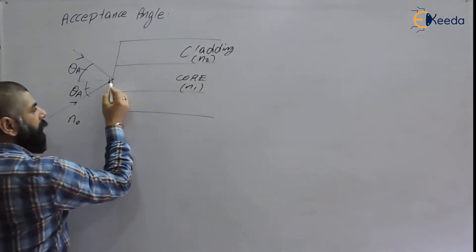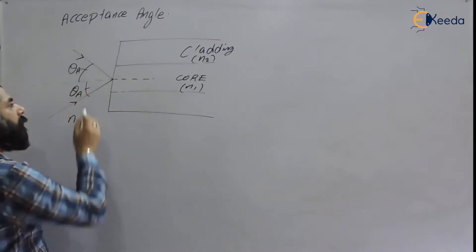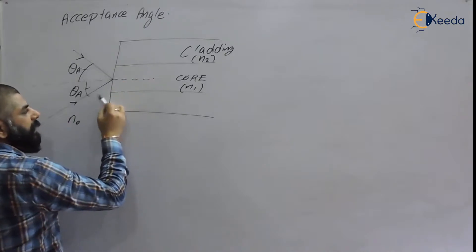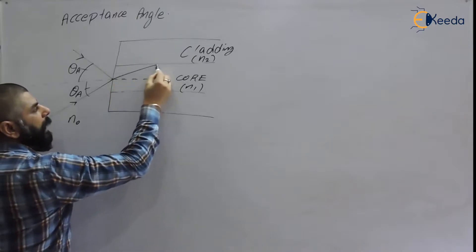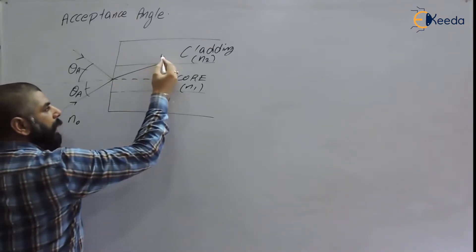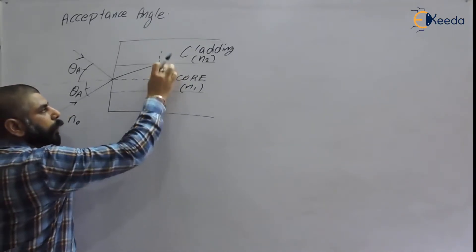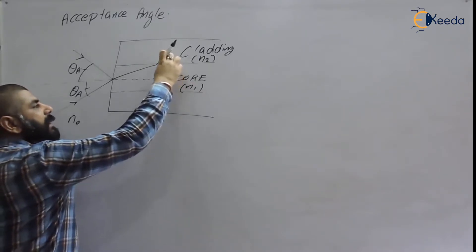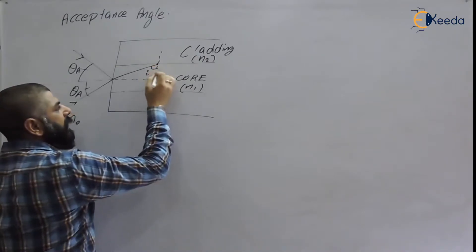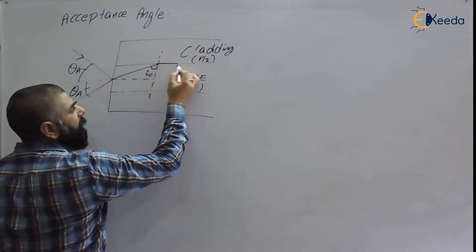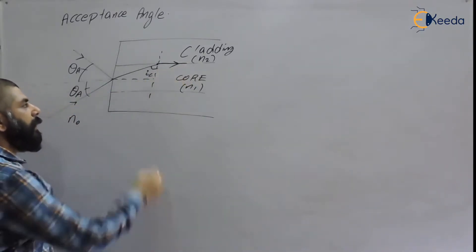The cladding has refractive index n2. When light enters, the surface normal acts as the reference. Since the core is denser, the ray bends towards the normal. At the core-cladding interface, total internal reflection takes place. If this angle of incidence equals the critical angle, the refracted ray goes straight — at 90 degrees.